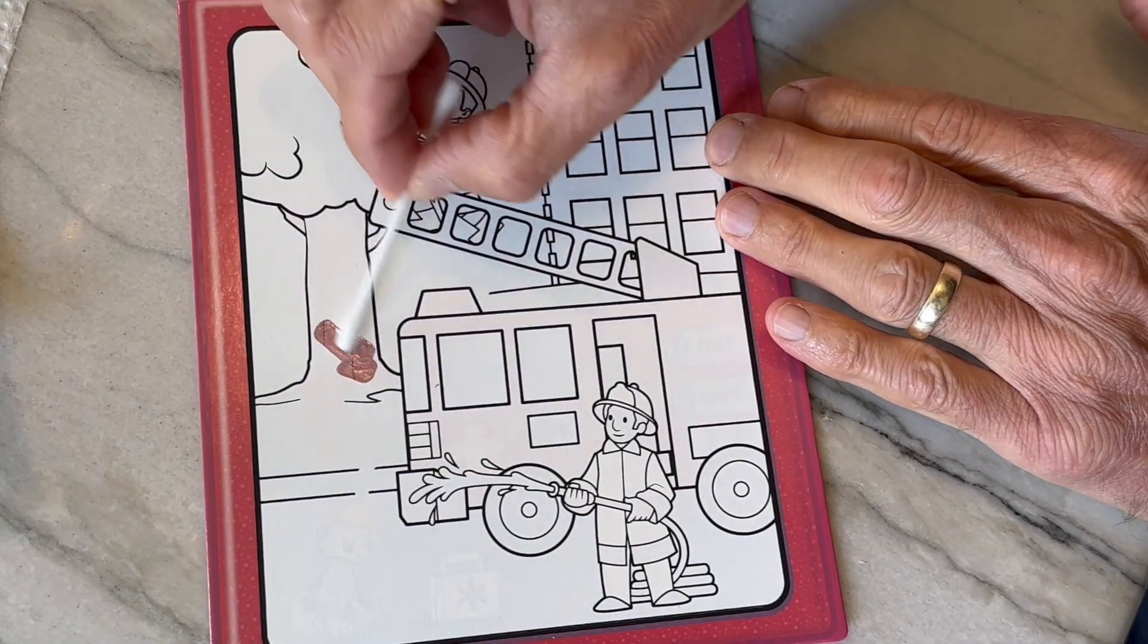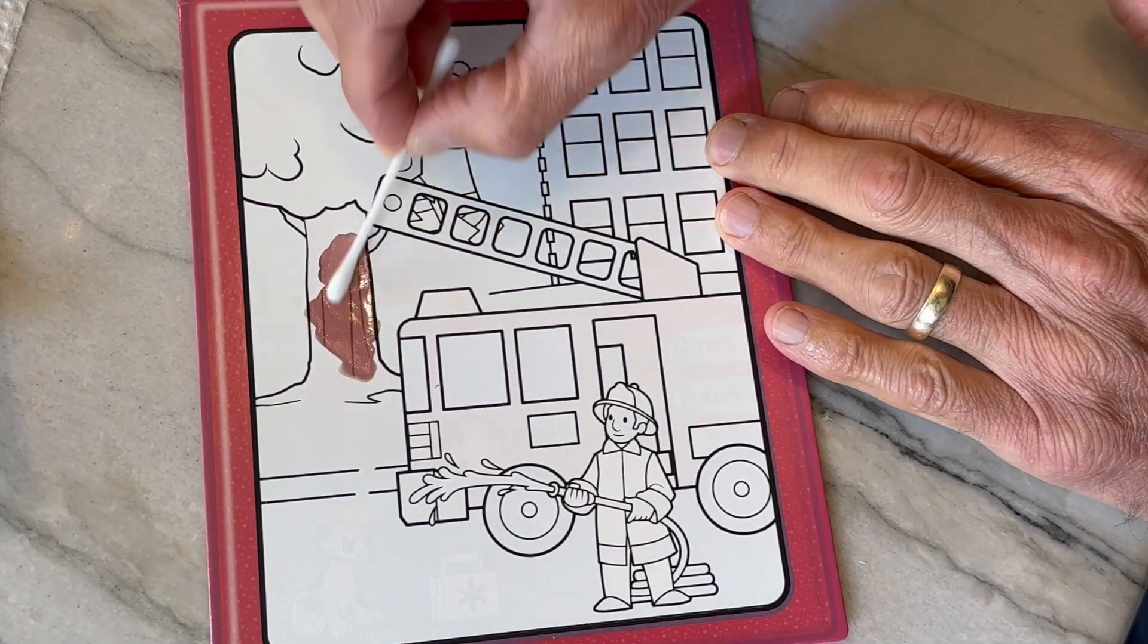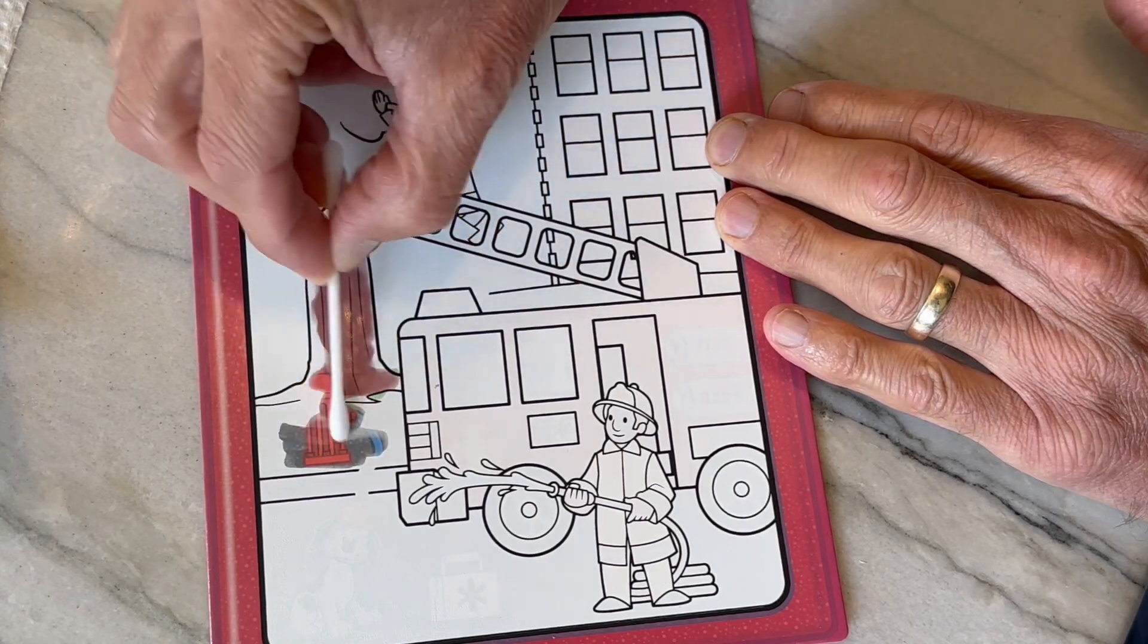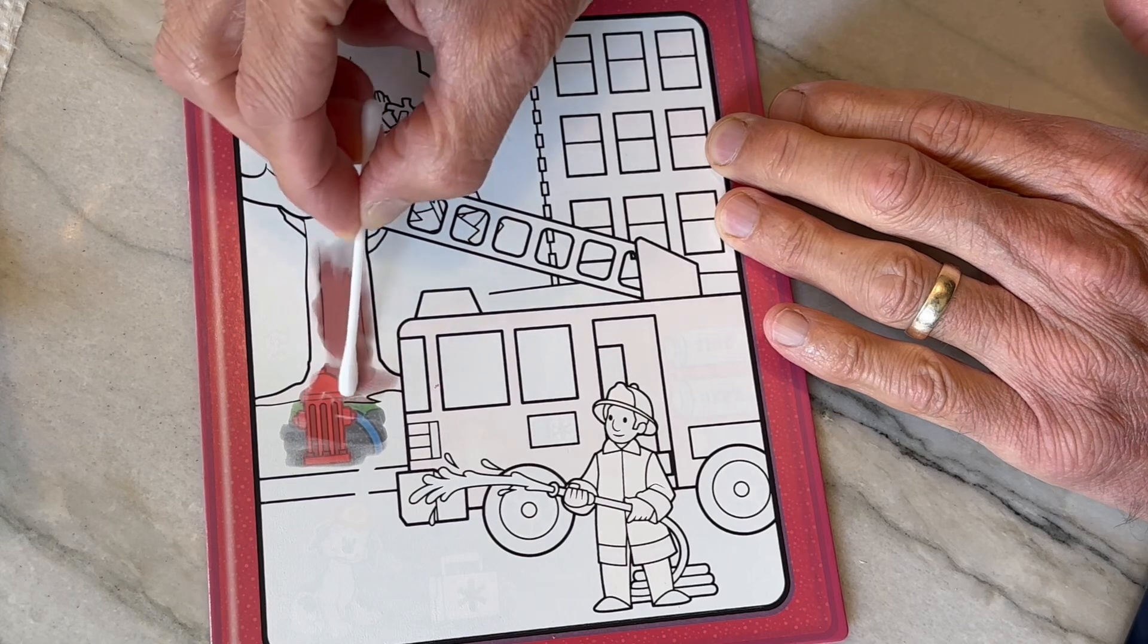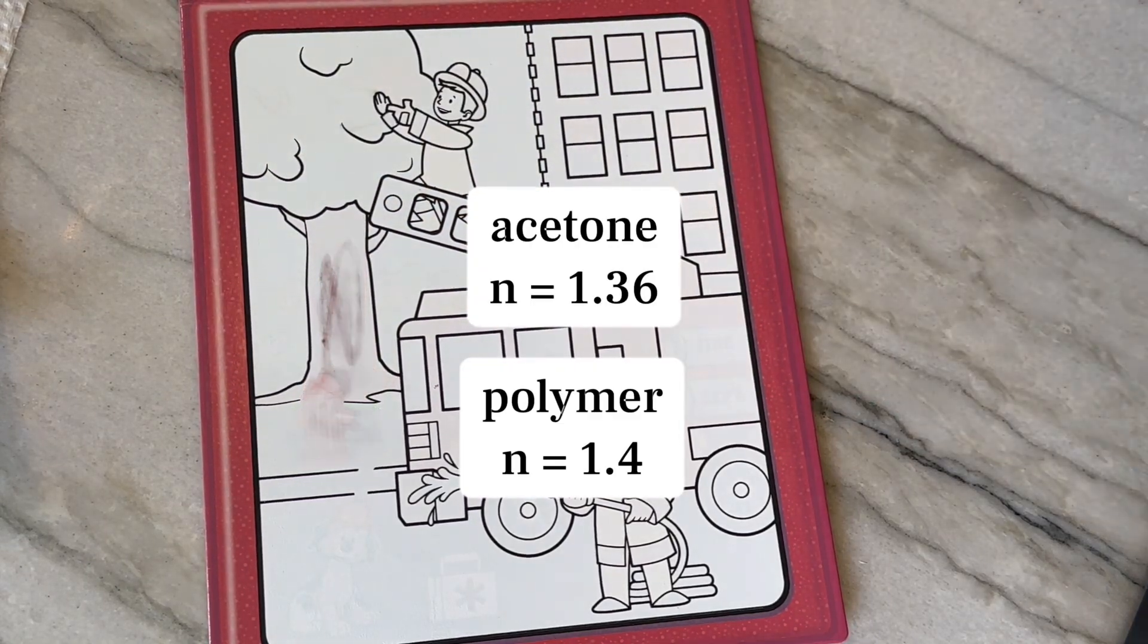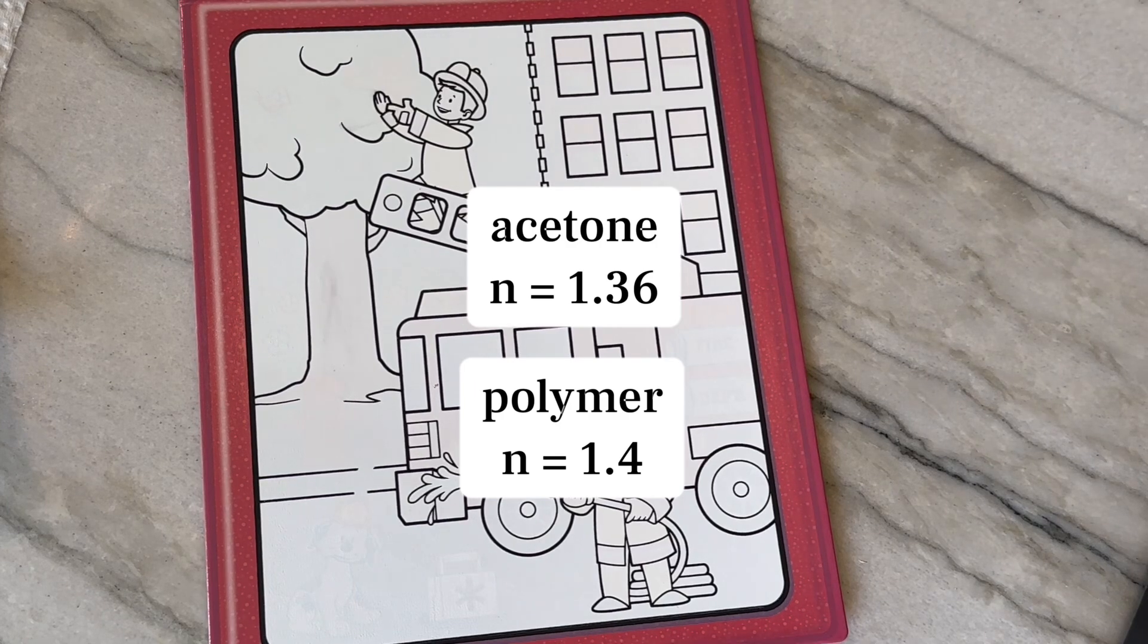I figured I could get the colors to appear permanently if I removed the polymer coating. So I rubbed one of these pages with a Q-tip soaked in acetone. The colors immediately became visible, but that's just because the refractive index of acetone is close to that of the polymer. And of course, the colors disappeared as the acetone evaporated away.